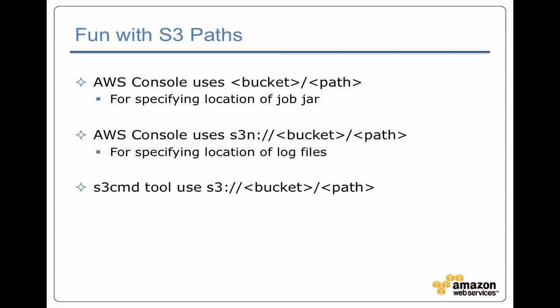A common gotcha is how different tools require you to specify the path. For example, if you're using the AWS Management Console to define a job flow, it asks for the path to your job jar as just bucket slash path to the jar. But later in that same console, when specifying where log files should go, you have to use S3N colon slash slash and then the bucket and path — because that's creating a Hadoop path using the S3N (S3 Native) protocol. If you're using command line tools, those expect the path as S3 colon slash slash and bucket and path.